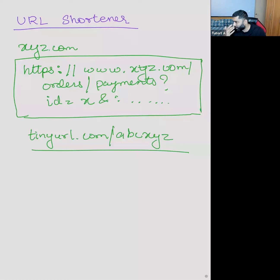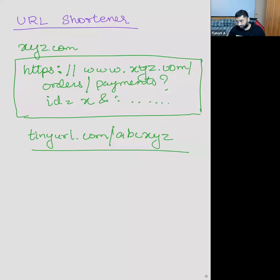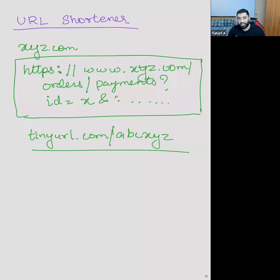There might be a case where somebody's buying something from your e-commerce website and there's an affiliate ID in the link. People would not want it exposed directly because it gives the feeling that somebody's trying to gain out of you. So when you don't want query parameters to be visible, you'd try to encode this into a tiny URL or short URL.